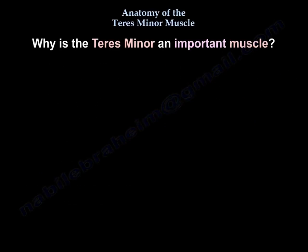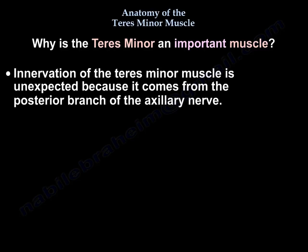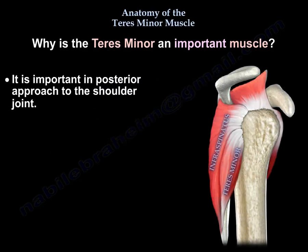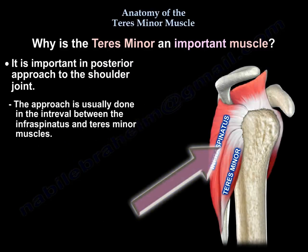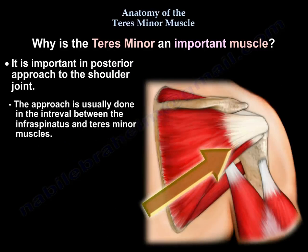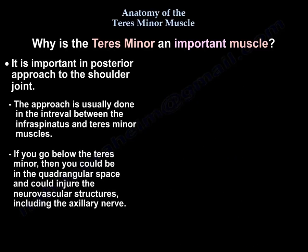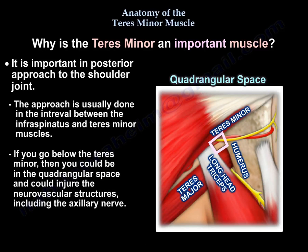Why is the Teres Minor an important muscle? The innervation of the Teres Minor is unexpected, because it comes from the posterior branch of the axillary nerve. It's also important in the posterior approach to the shoulder — you typically go in the interval between the infraspinatus and Teres Minor. If you go below the Teres Minor, you could be in the quadrangular space and injure the neurovascular structures, including the axillary nerve.